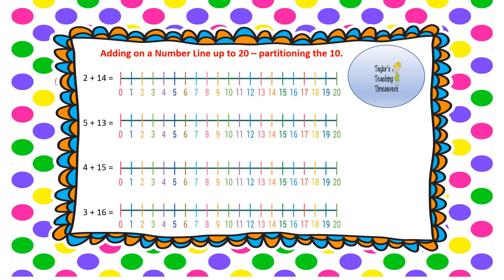We're going to continue adding on the number line up to 20, but this time we're going to partition the number. Partitioning is just a fancy word for splitting up the number. Our first question is 2 add 14. I start on 2, but 14 would be an awful lot of jumps, so I'm going to split my 14 into a 10 and a 4. Using my knowledge that 2 add 10 gets me to 12, I then jump 4 more places: 1, 2, 3, 4. I land on 16, so 2 add 14 equals 16.